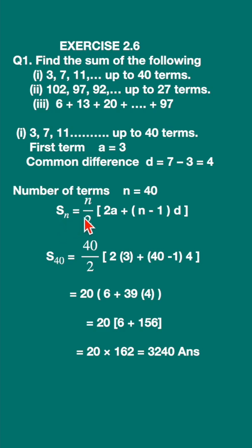S_n is equal to n upon 2, brackets, 2a plus (n minus 1)d, where d is the common difference, a is the first term, n is the number of terms. In this sum it is 40.